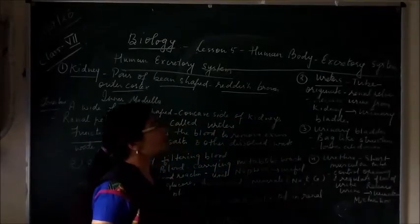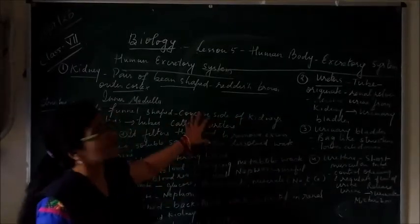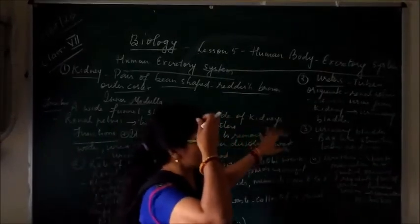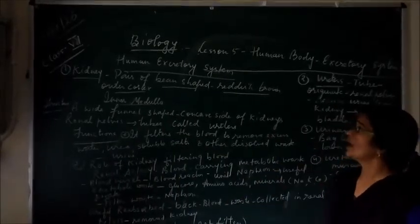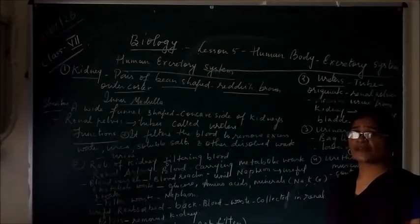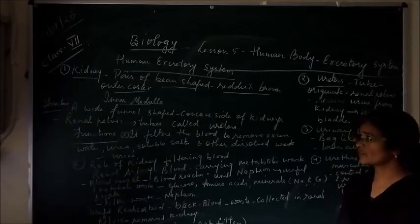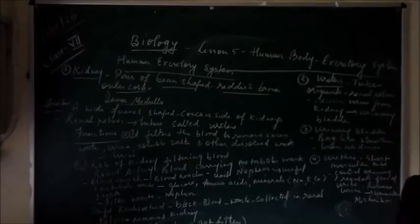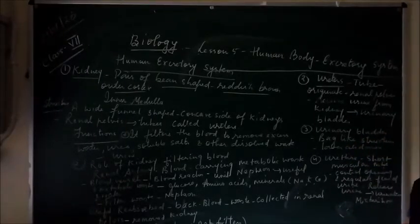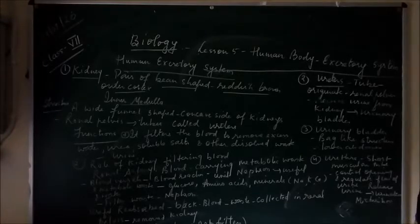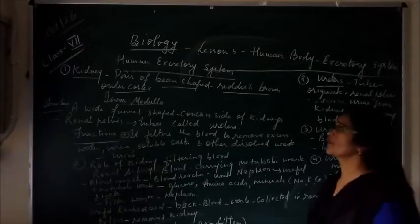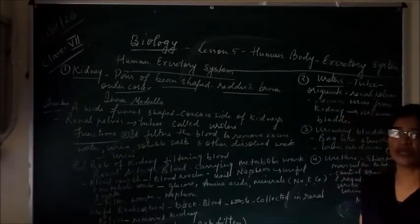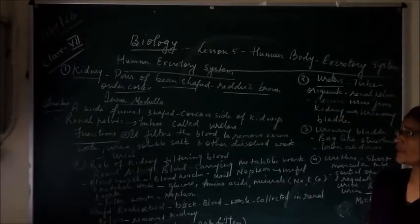Good morning students. Today we will continue the lesson on the human body excretory system in class 7 biology. In the previous class I explained the different organs of the excretory system, and today we will study about the structure of the kidney and how the kidney works, what are its functions as well as its structure.